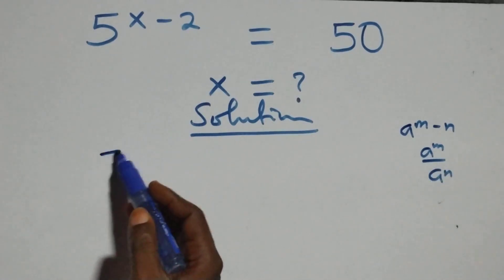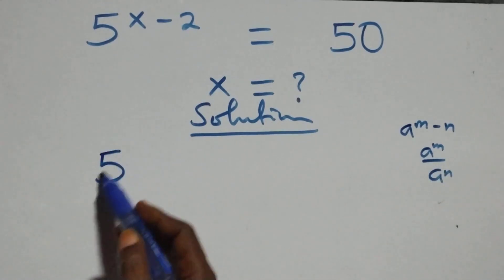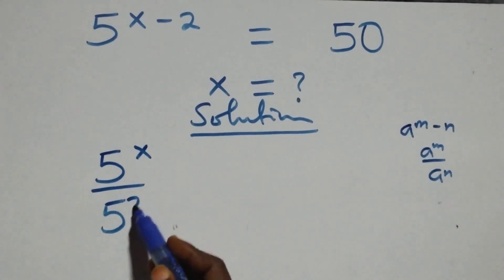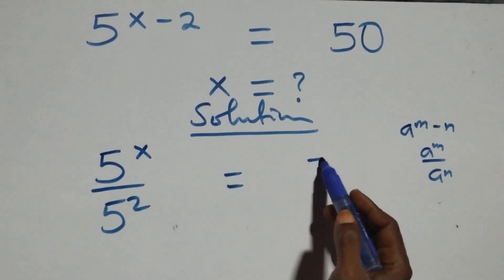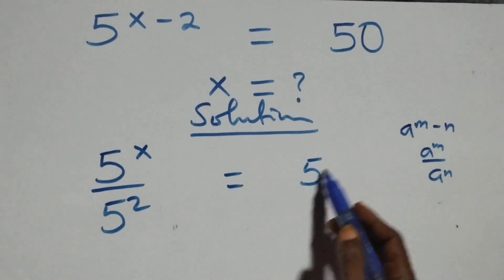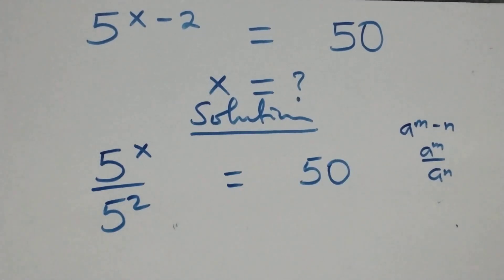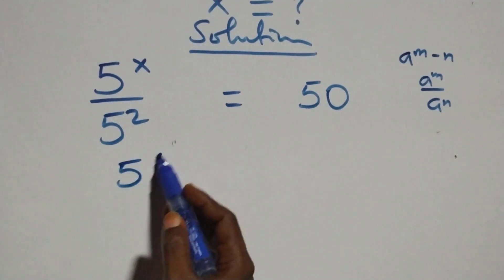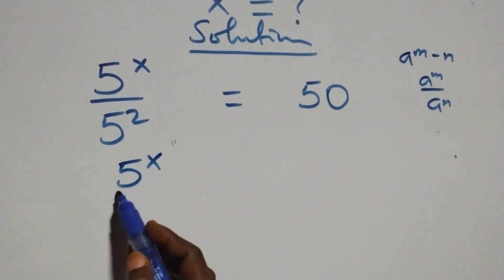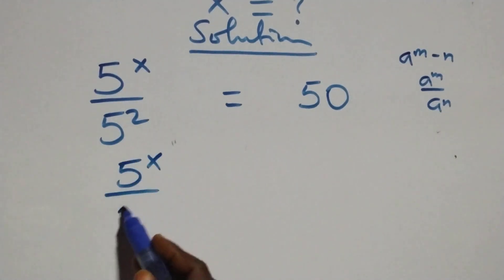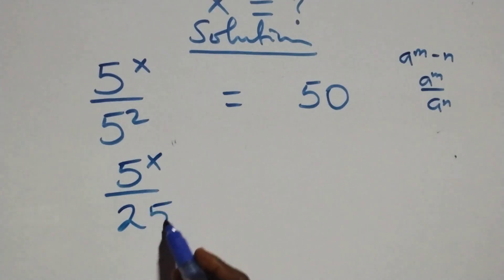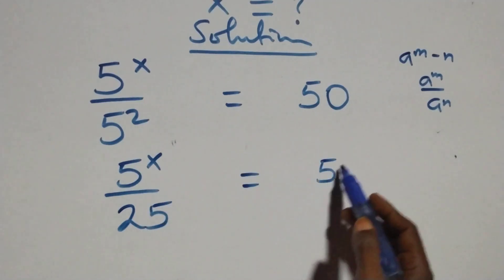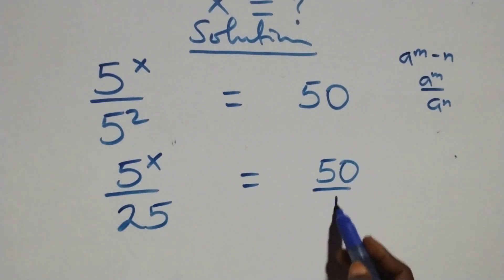What we have here becomes 5 raised to power x over 5 squared equals 50 on this side. This is the same thing as 5 raised to power x over 5 squared — 5 times 5 is 25 — then equals to 50 over 1.